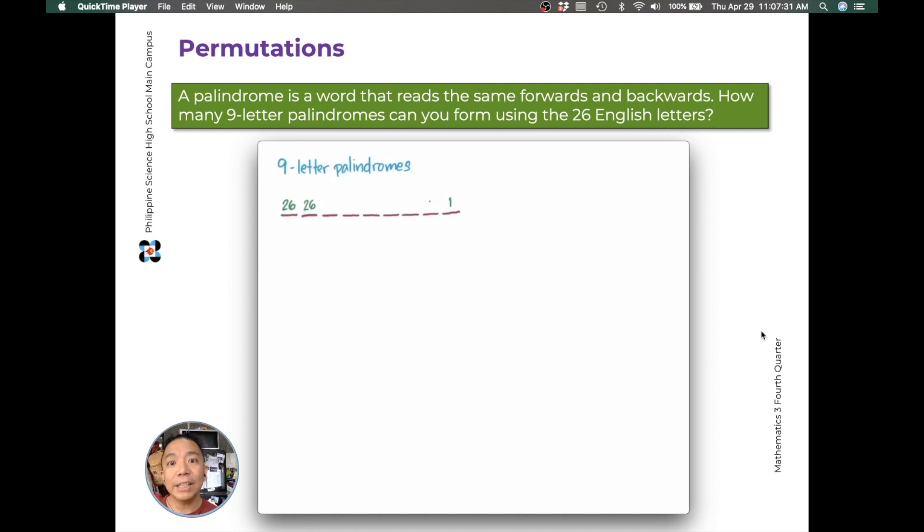So if you choose B first, then B can still be second. So having chosen a second letter, that leaves you no choice for the second to the last letter. Whatever you placed as the second letter, that's also your second to the last letter. Let's look at the third letter. You have 26 possibilities because you have the entire set of the English alphabet at your disposal. Then the third to the last, only one is possible. For the fourth, you have 26 choices again. Fourth to the last, only one is possible.